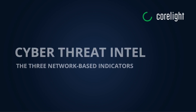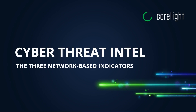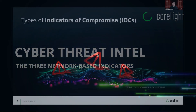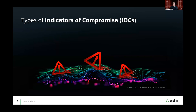When we talk about IOCs, they can be divided into three types. Atomic indicators are static evidence like IP addresses, domain names, URLs, et cetera — information that's easily observed in traffic as it flows across the network in both unencrypted and often encrypted traffic.